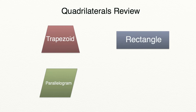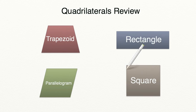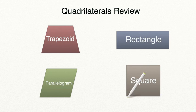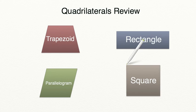Let's look at our final quadrilateral, a square. A square is required to have two sets of parallel sides. It's also required to have four 90-degree angles, and lastly, a square has to have four sides that all have the same length.